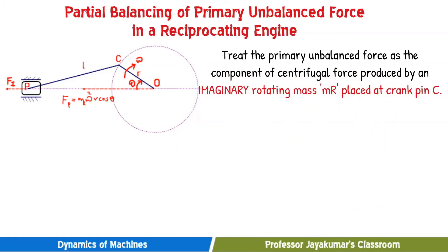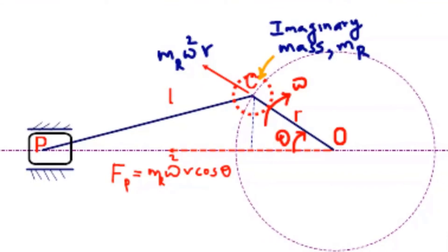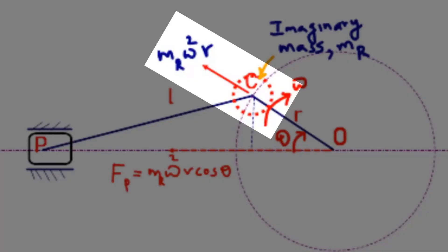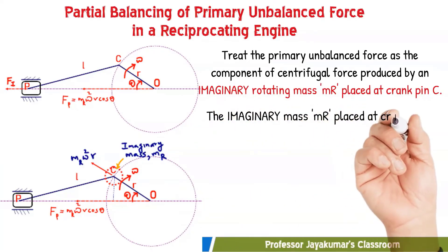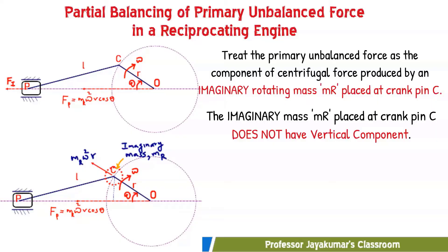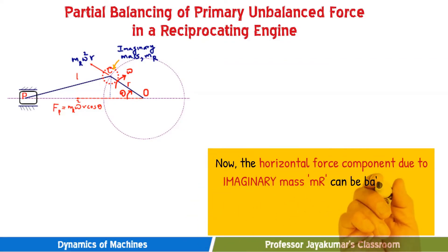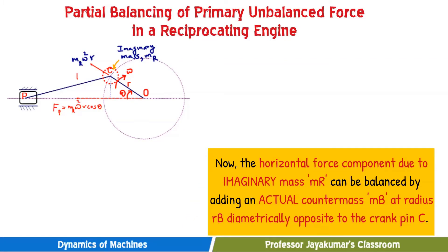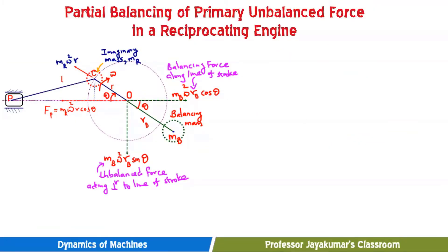We know the direction and magnitude of the primary unbalanced force — we need to balance it. The technique used is to place an imaginary rotating mass of value equal to the mass of the reciprocating parts mr at the crankpin C. This imaginary mass will produce centrifugal force mr·ω²r, whose horizontal component will be equal to that of the primary unbalanced force. Being imaginary, it does not have any vertical component.